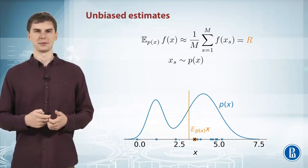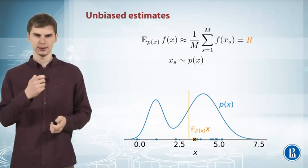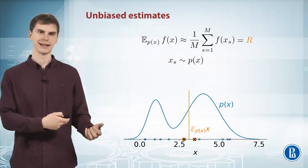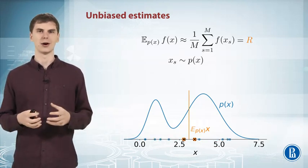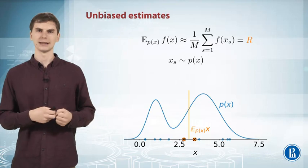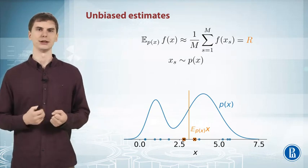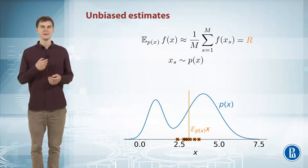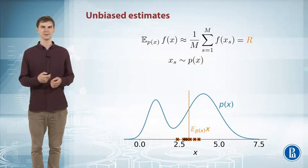And this is actually a random variable. So if you repeat this process, if you generate other set of samples and again write down the average of them, you will get some other approximation of your expected value. And by repeating this process more and more times, you can get samples from your random variable R.